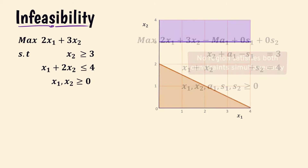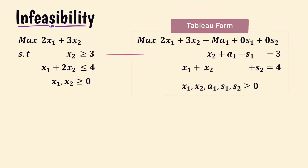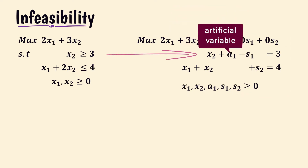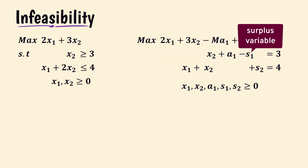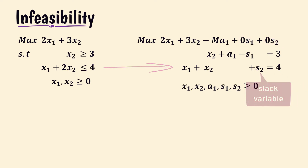Here we have the model in tableau form. For the first constraint, we add the artificial variable a1 and subtract the surplus variable s1 because it's a greater-than constraint. And for the second constraint, we add the slack variable s2 since it's a less-than constraint.